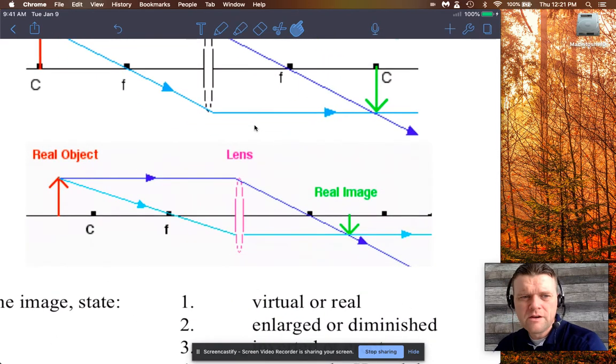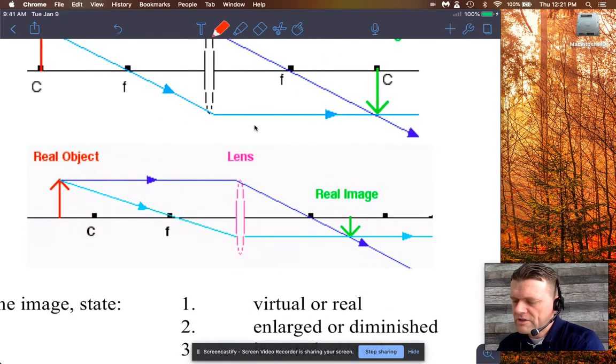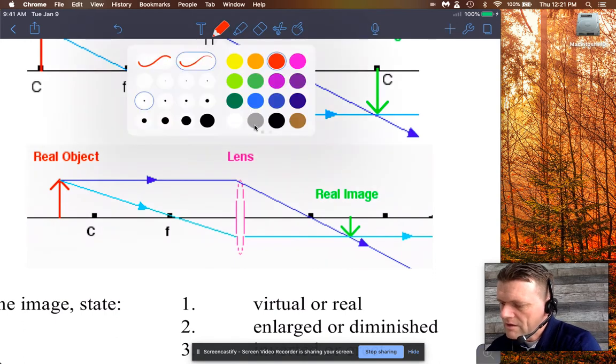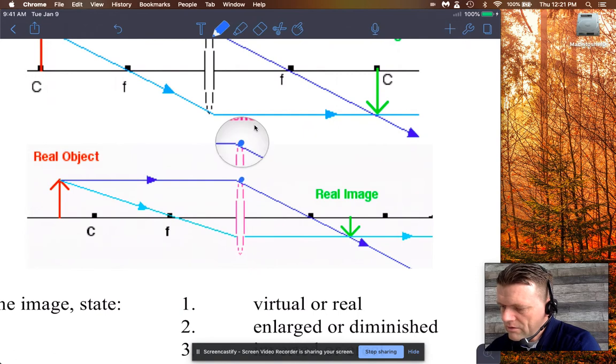So here we are outside of the center. So you see that we're beyond the center and we stick the object right there in red. Rays of light—the darker blue ray is parallel to the principal axis, but after it hits the lens then it goes through the focal length just like that.